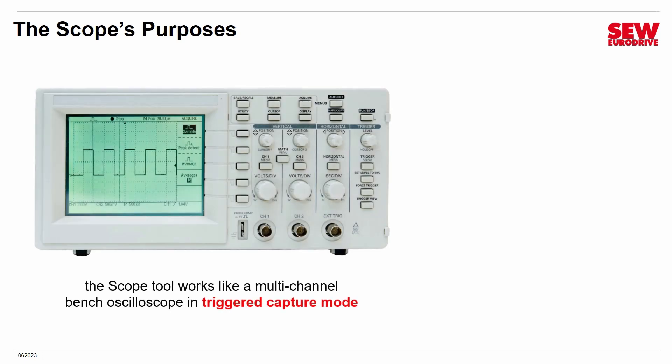The Scope tool works like a multi-channel bench oscilloscope in Triggered Capture Mode. Triggered Capture Mode is a mode that laboratory oscilloscopes have, where the oscilloscope, instead of simply displaying the data coming in on its individual channels, waits for an event to happen. When the event happens, it captures a snapshot of all the channels for a brief period of time.